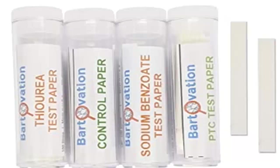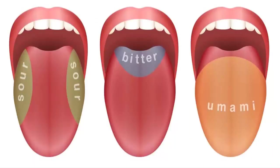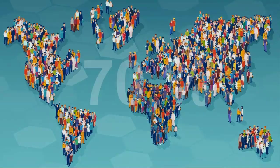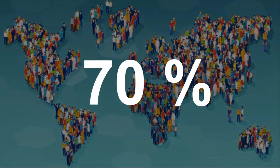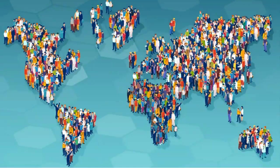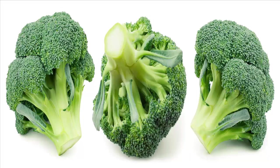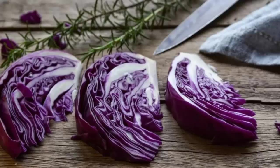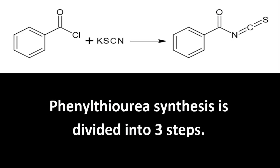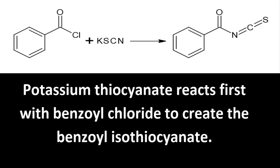Phenylthiourea, also called phenylthiocarbamide (PTC), is used in the form of bands which contain micrograms of this substance because it is highly toxic. They are used in tests to determine the perception of taste according to genetic profile. In theory, 70% of the population is able to detect the bitterness of phenylthiourea. Certain foods such as broccoli and cabbage contain bitter substances similar to phenylthiourea — toxins produced by plants as a defensive strategy.